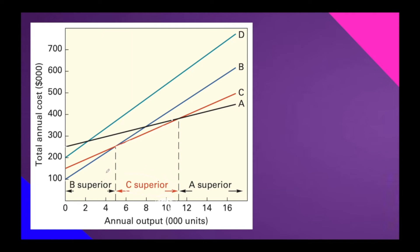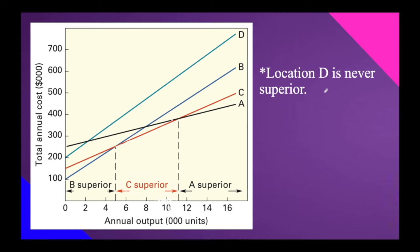As you can see on the graph, if the quantity is around 5,000 or lower, you should choose the blue line — location B — as that is the most beneficial. And if the quantity is around 11,000 or higher, you should choose location A, the black line. Also, location D is never superior — meaning for any quantity you have in mind, you should never choose location D, because it will lead you to a greater cost compared to the other three locations.